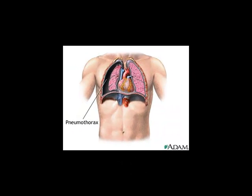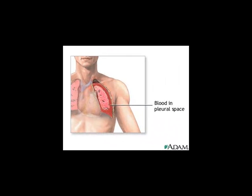A pneumothorax and a hemothorax — 'pneumo' refers to air, so a pneumothorax means air in the pleural cavity. A hemothorax would be blood in the pleural cavity. Not inside the lung, but in that space in between those two membranes.